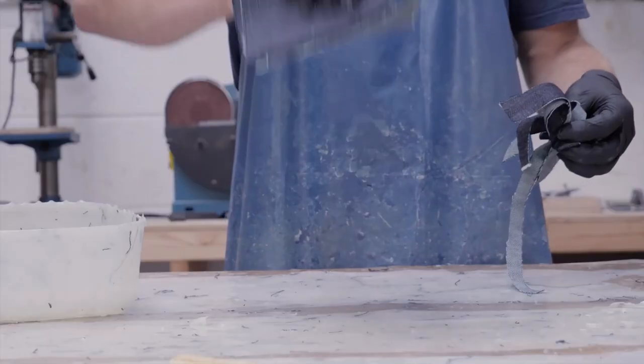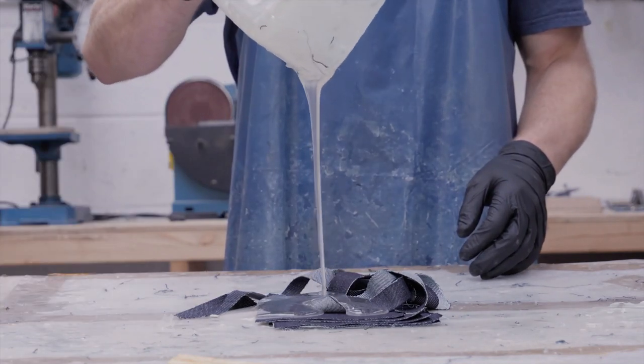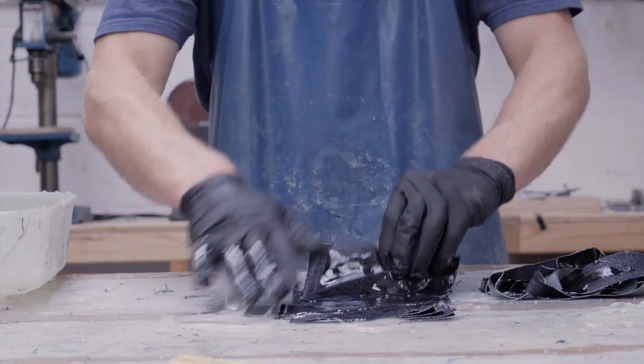I start by cutting up the denim into pieces and mixing together the two parts of the epoxy resin. I spread the resin around with my hands, making sure it's absorbed into all those cotton fibers.